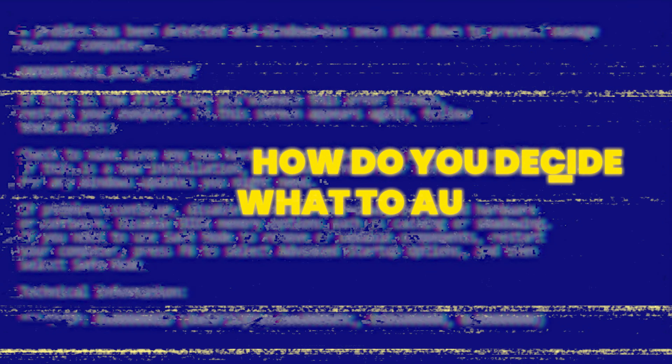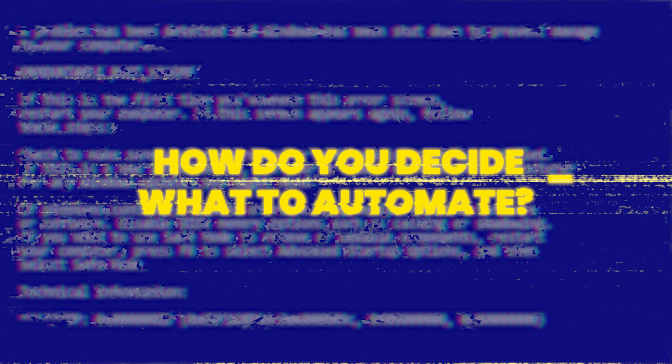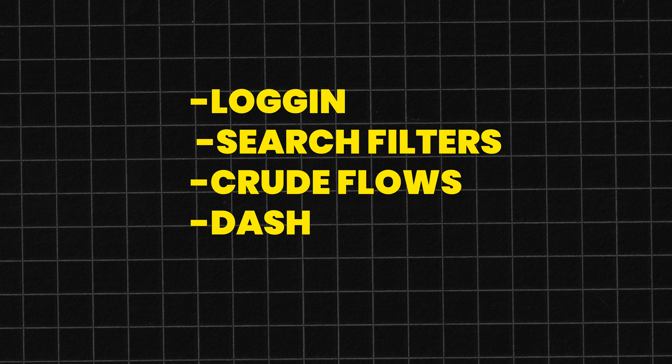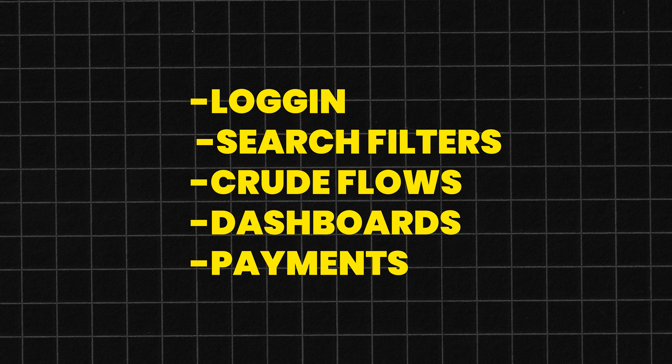The strategy question that shows maturity: how do you decide what to automate? I usually automate things that are repeated a lot or take too long manually — login, search filters, CRUD flows, dashboards, payments. Those are perfect for automation. But if something is changing every day or the UI hasn't stabilized, automating too early will just create more work. So I wait until the flow is stable enough, or automate the API layer first while the UI catches up.